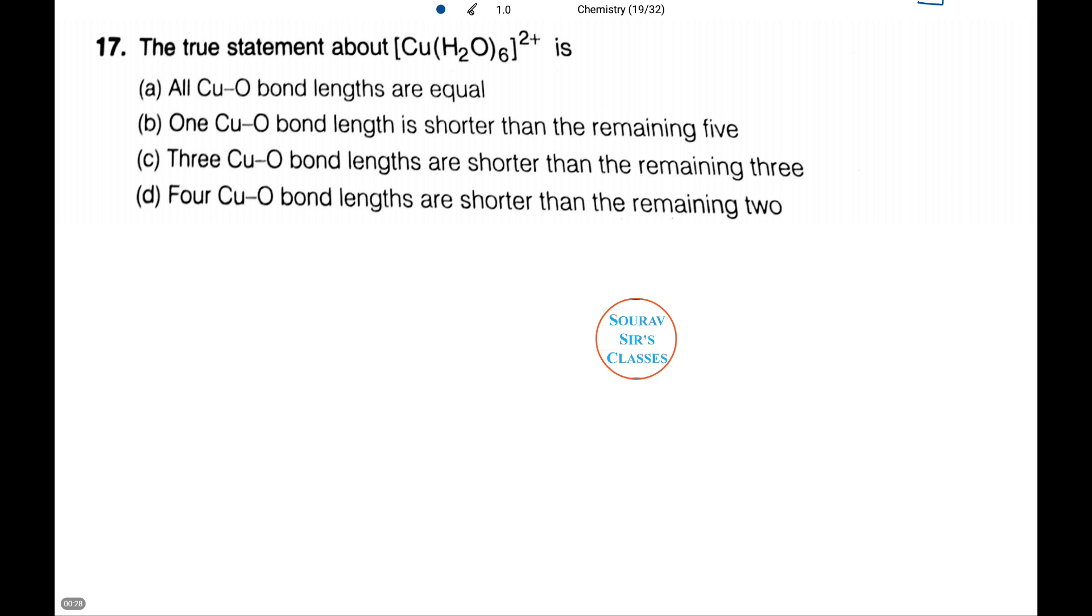We need to find the true statement about the following compound: Cu(H2O)6^2+. Is it A, B, C, or D? Please see the answers because I am going to show you how to do it.